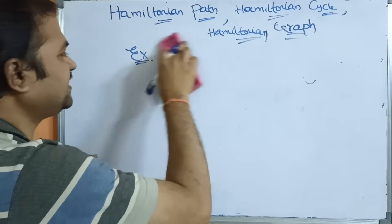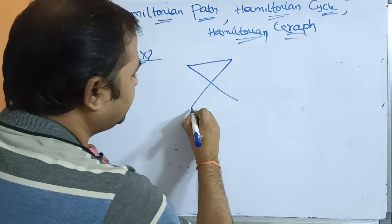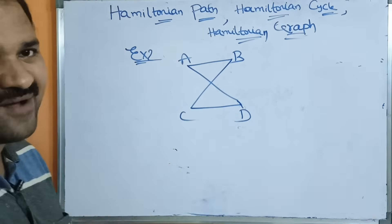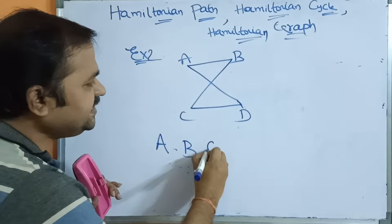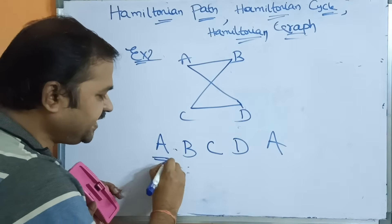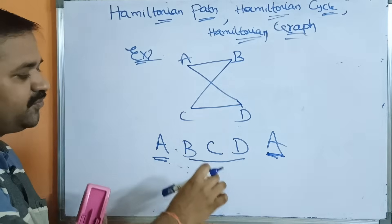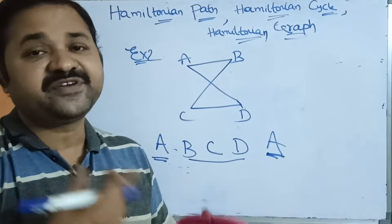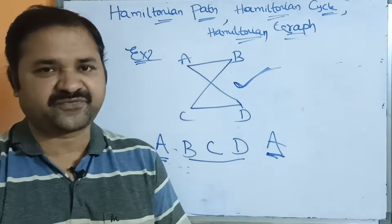Let us see one more example to demonstrate a Hamiltonian graph. Start at vertex A, visit B, then C, then D, then back to A. We started at A, visited all remaining vertices, and returned to the starting vertex. This is a Hamiltonian circuit, so this graph is a Hamiltonian graph.